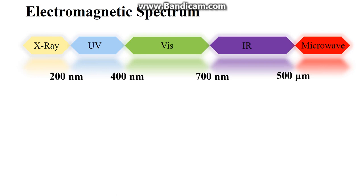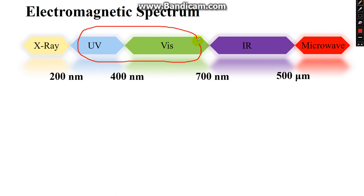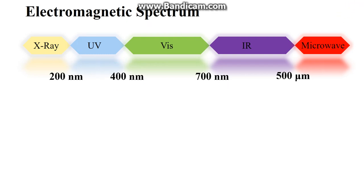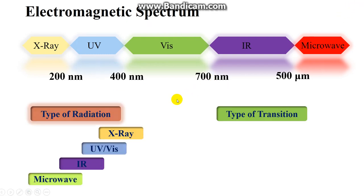Here we'll be working on the UV and visible domain. The visible domain starts from 400 nanometers and goes up to 700 nanometers. Anything below 400 nanometers and above 200 nanometers is UV. This UV and visible spectroscopy works on this domain of the spectrum, so we are interested in the range from 200 to 700 nanometers.